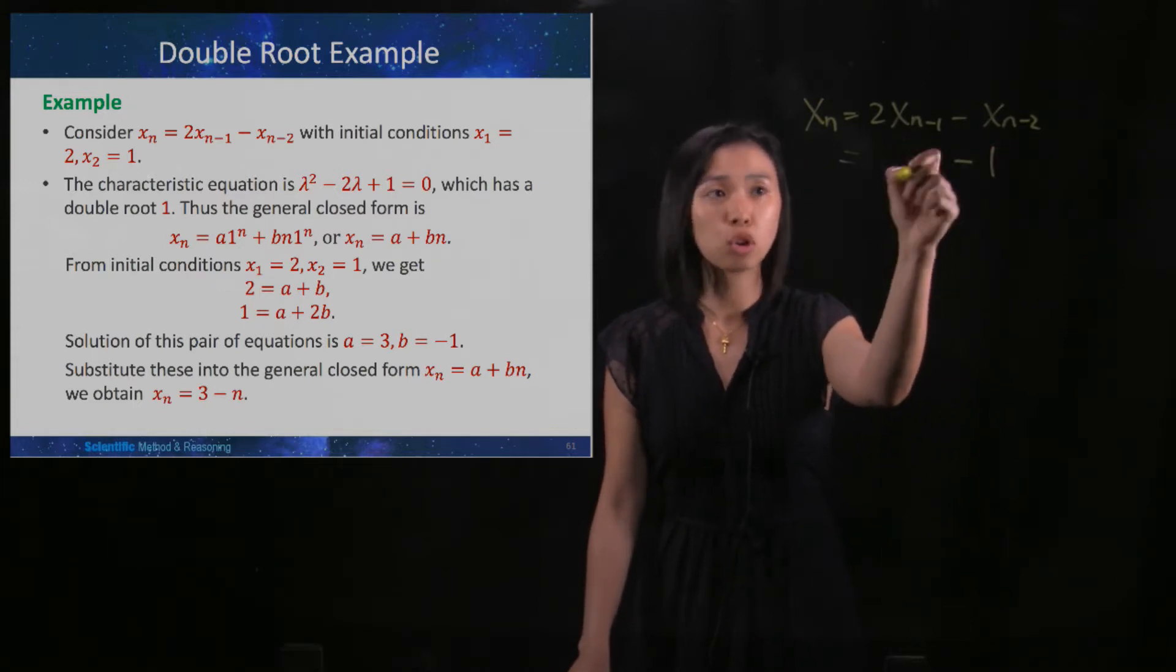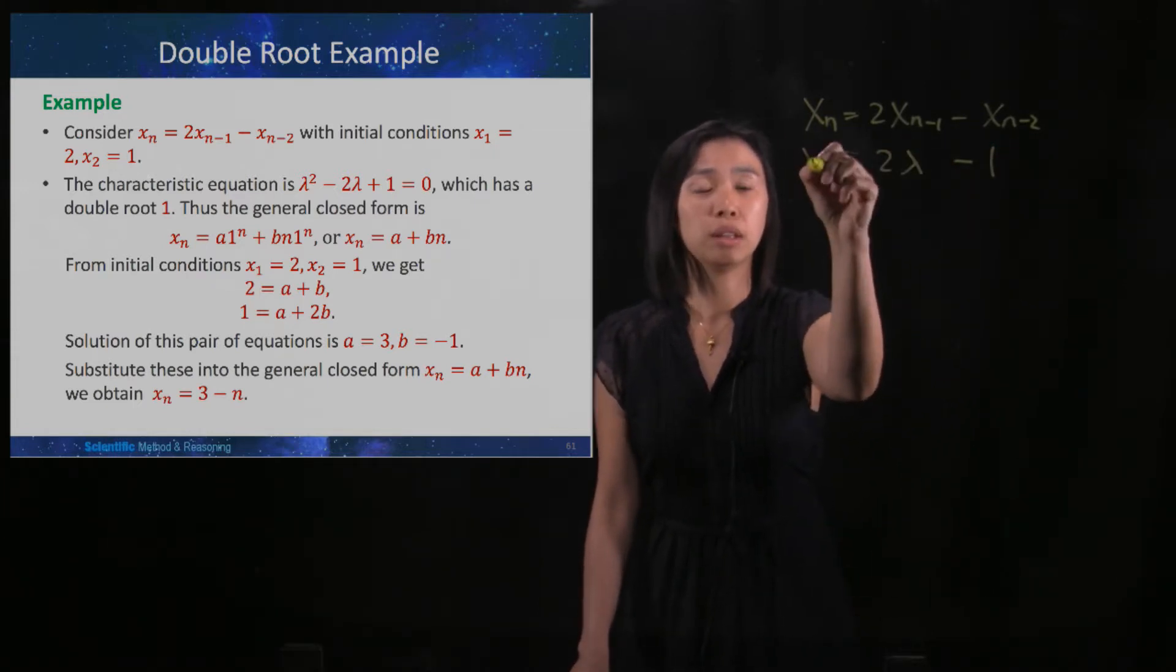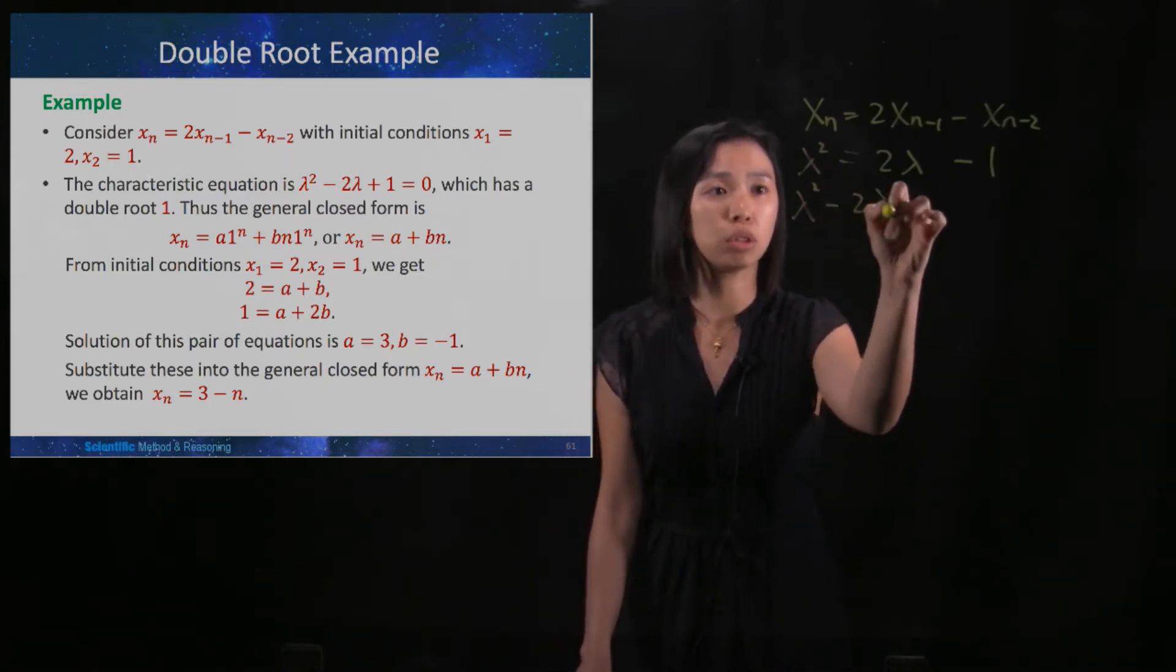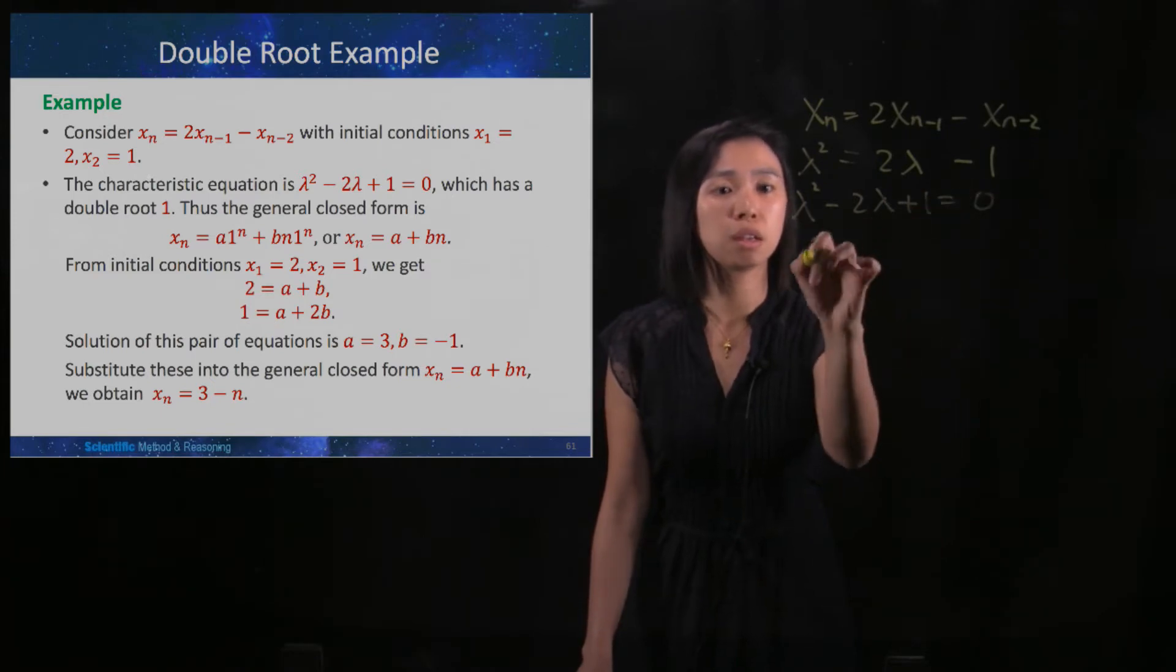Then the next term, we'll change it to lambda, and then the third term, we'll change it to lambda squared. And we will move everything to the left-hand side, factorize.